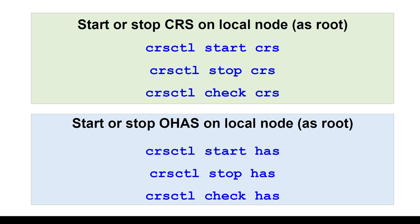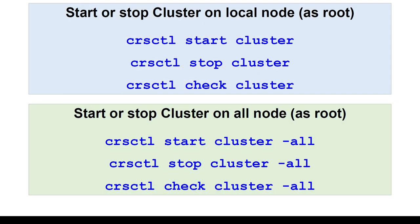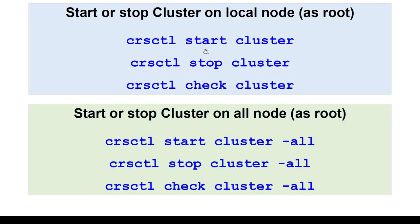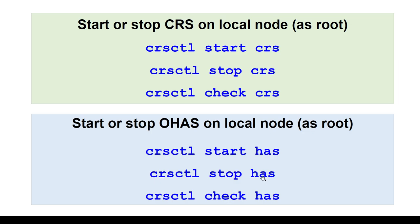If you want to start the CRS or HAS service, you will use start CRS. Both commands will have exactly the same effect. The HAS services will be stopped using this particular command. Now remember: when you stop the cluster, only the cluster resources will be stopped. The HAS resources will still be up. If you want to stop everything, you have to use stop HAS. So if you want to reboot the server, you stop the cluster and then you stop the HAS services.